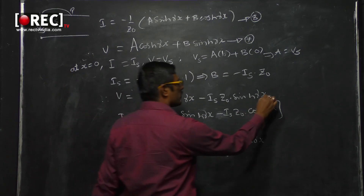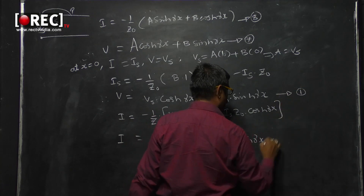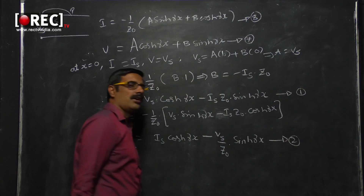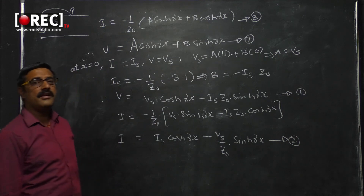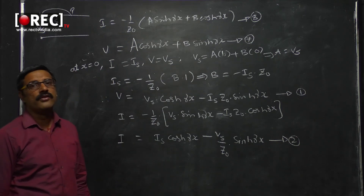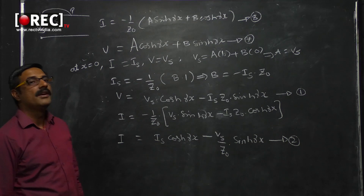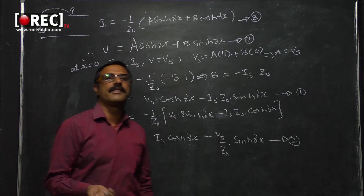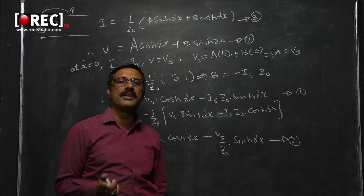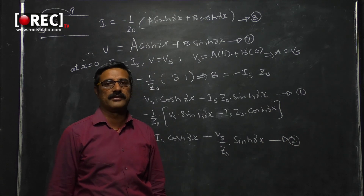These two expressions — V equals Vs·cosh(γx) minus Is·Z₀·sinh(γx), and I equals Is·cosh(γx) minus (Vs/Z₀)·sinh(γx) — are called equations one and two, and they are the transmission line equations in terms of source parameters. In the next session, the transmission line equations in terms of receiver parameters will be derived.